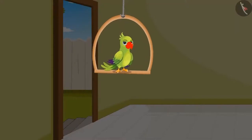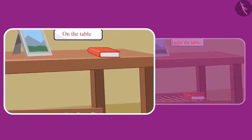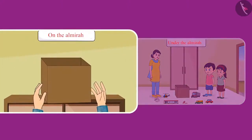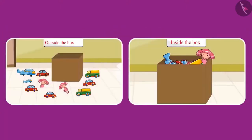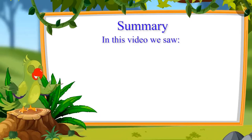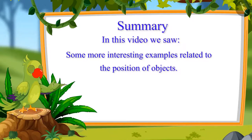So children, did you see how Pinky and Chotu changed the position of different objects while cleaning the rooms? Like picking up the notebook from the table and placing it under the table, and the toy box was on top of the almira. Chotu and Pinky picked all the toys which were lying outside the box and kept them inside the box. In this video we saw more interesting examples related to the position of objects like on, under, inside, and outside. I hope you all understood this properly.